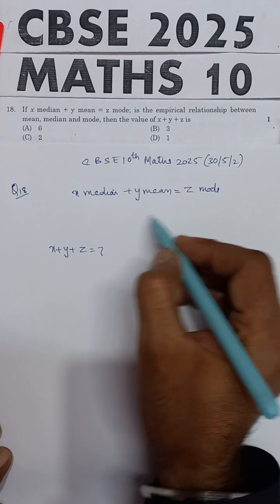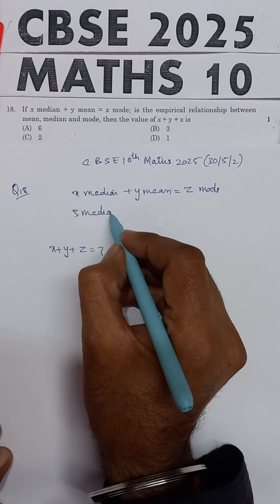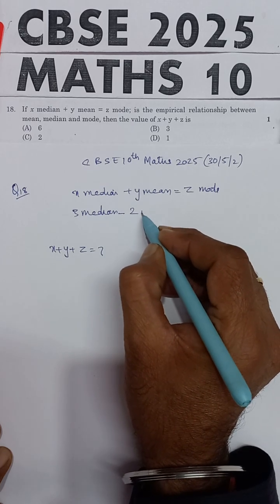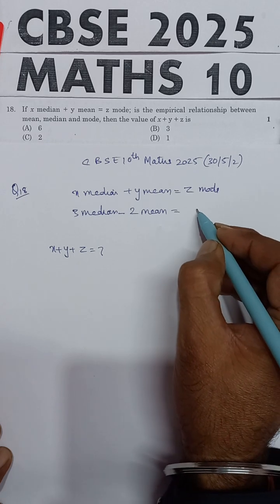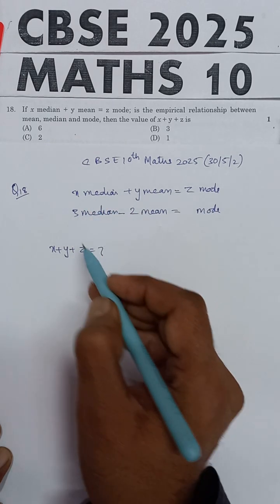3 times the median minus 2 times the mean equals the mode. So if we compare these two relationships